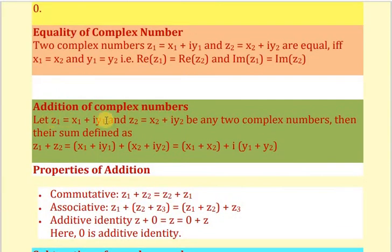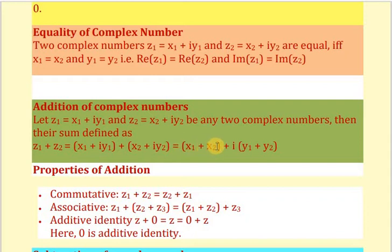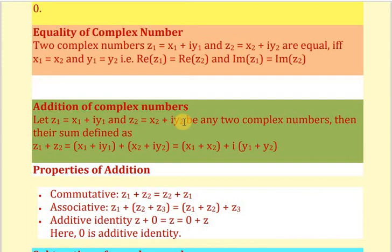Now let us move on to addition of complex numbers. If two complex numbers are given as z1 equals x1 plus iy1 and z2 equals x2 plus iy2, then their sum is defined as z1 plus z2 equals x1 plus x2 plus i of y1 plus y2. You add the real parts together and separately add the imaginary parts together.